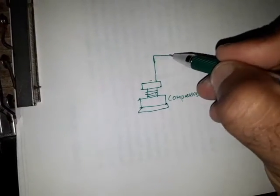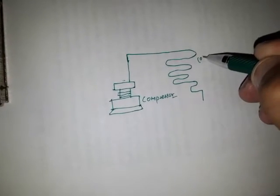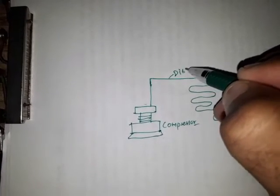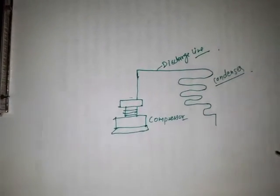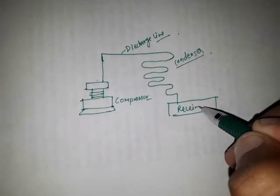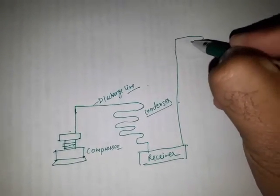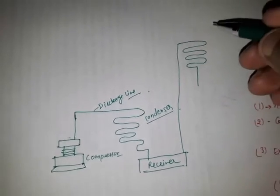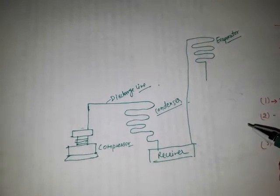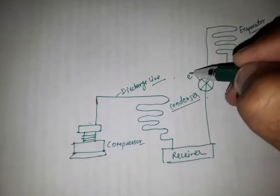From the compressor there is a discharge line that goes towards the condenser. Next is the receiver, and from the receiver it goes to the evaporator. Between the receiver and evaporator there is an expansion valve.